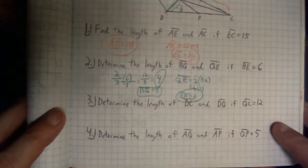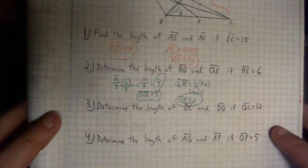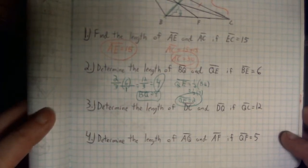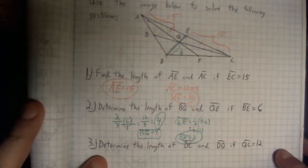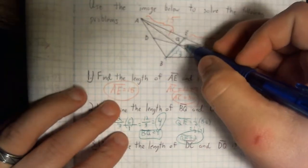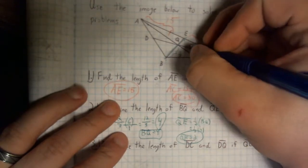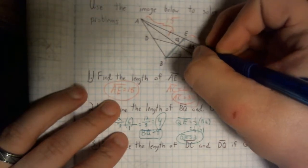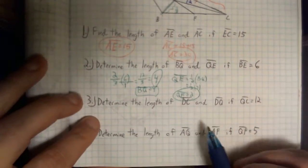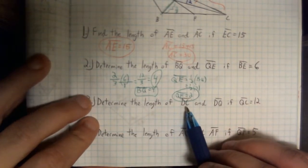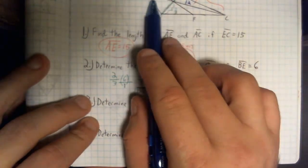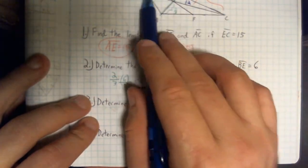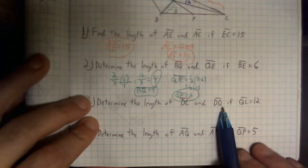We have another problem. Number 3 says, determine the length of DC and DQ if QC equals 12. Well, let's take a look. QC is this piece right here. This is going to be worth 12. The first piece that they ask for is DC. DC is the entire length. Well, we need to figure out the length of DQ in order to get the entire length to do some addition. So, let's move on to DQ.